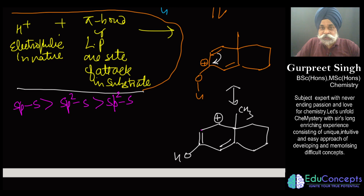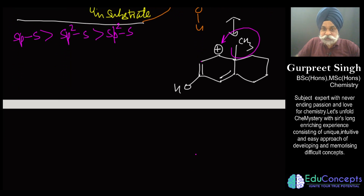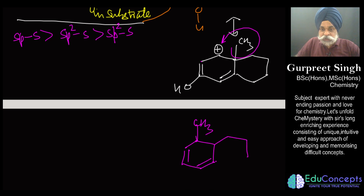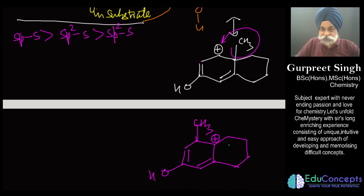What we can do is perform a methyl shift. After the methyl shift, the methyl group migrates, and the positive charge moves to an adjacent position. The carbocation now achieved is tertiary and is also resonance-stabilized.